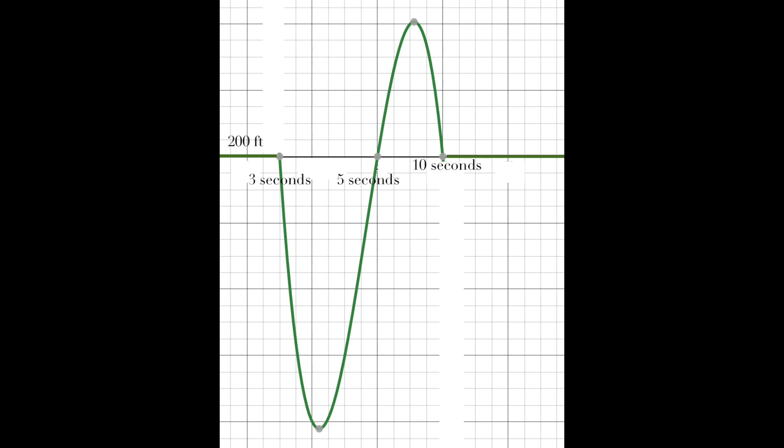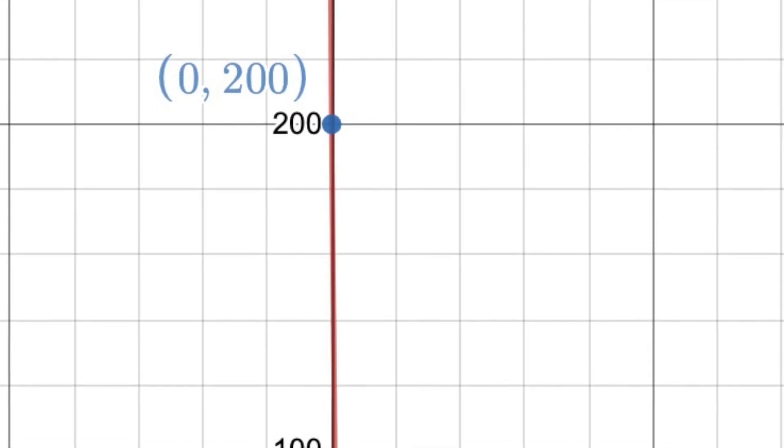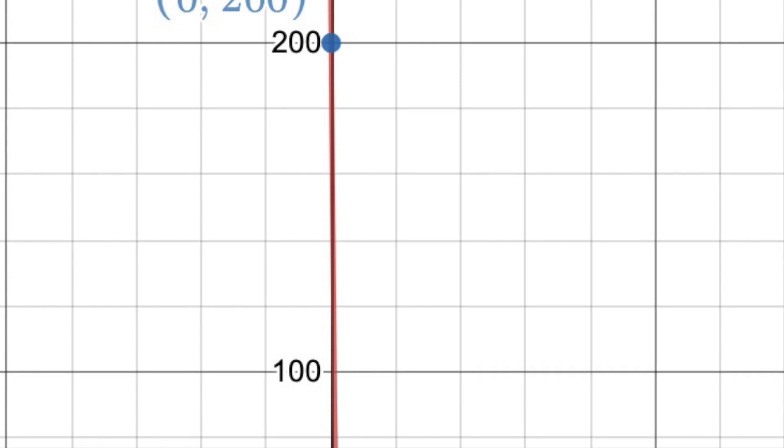Now we have to take into account another variable, t. t will represent the time in seconds passed since the start of the ride. Since we know that the coaster starts at 200 feet, f of 0 will equal 200.